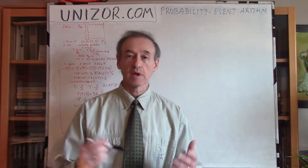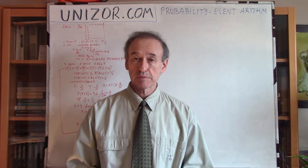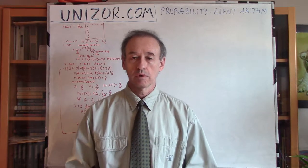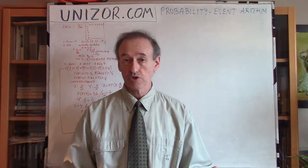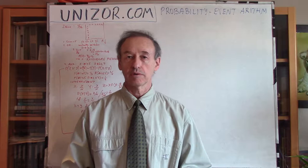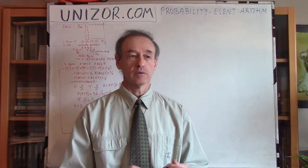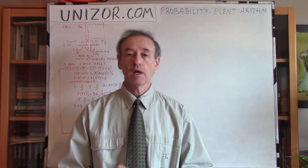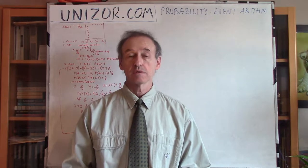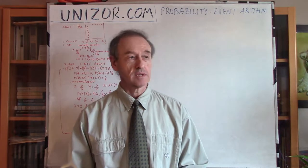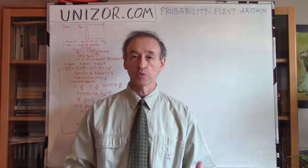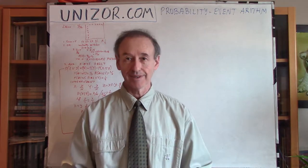We have introduced the concept of a sample space with elementary events. Each of them is assigned a certain measure. In some simple cases, all the elementary events are equally probable, so all of them have the same measure, and the sum of all the measures is equal to one. That's how the probability started — the total probability is always one.